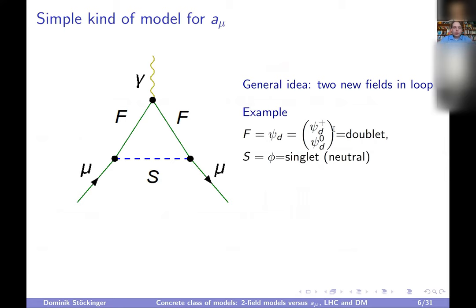Here you see the Feynman diagram for this model. G-2 is obtained very simply: we hypothetically assume the new physics model has two new particles, one fermion and one scalar, and the muon couples to both in a simple way. The loop consists entirely of new physics particles. Specifically, we take a fermion doublet — with one charged and one neutral component — and a neutral scalar singlet. The muon couples to the neutral scalar and the charged fermion in this way.